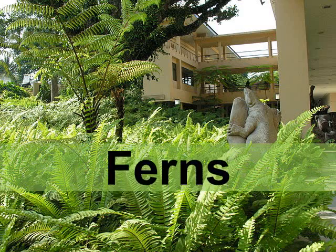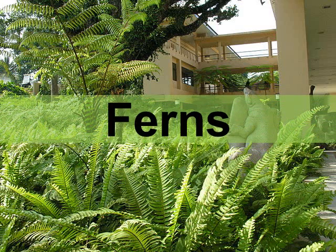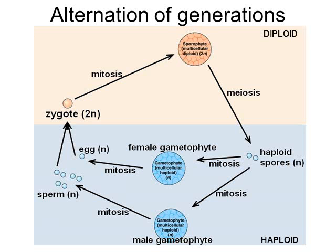In this video we're going to discuss ferns and some of the basic features of them. Before we get into ferns, I want to take a moment to discuss plants in general and how they alternate between diploid generations and haploid generations. The diploid generation of a plant is known as the sporophyte and the haploid generation is known as the gametophyte.